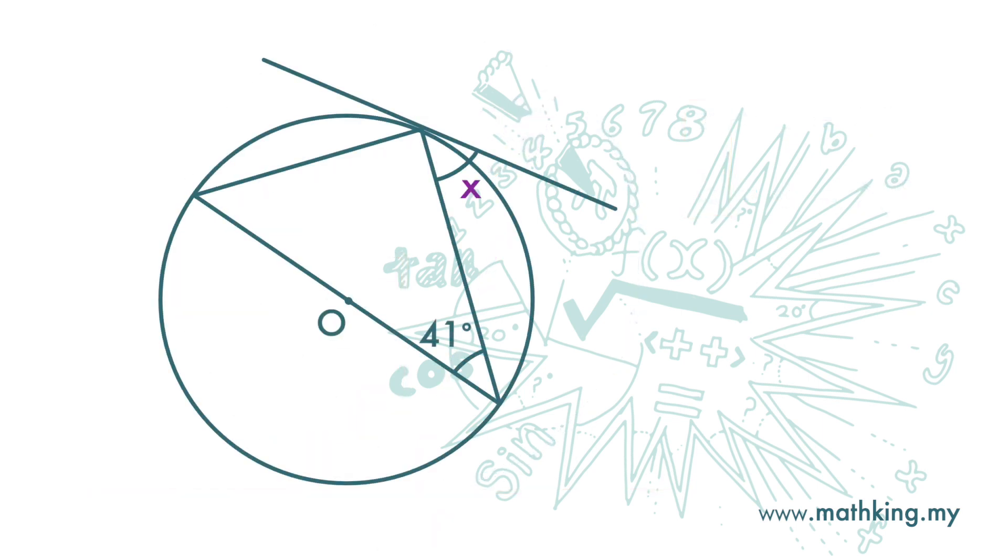Let's look at this diagram. We want to find x. This is the tangent, this is the chord, and this is the alternate segment. Angle x is equal to angle r.